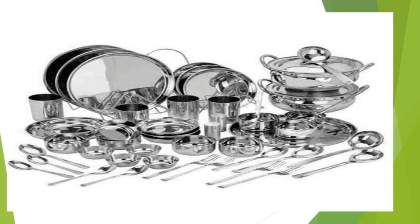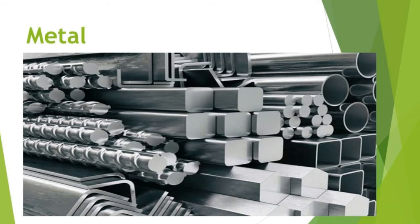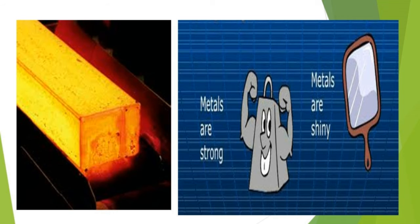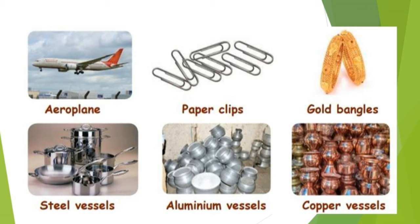Have you ever seen the different vessels in your kitchen? They are made from metals. Metals are materials got from metal ores — for example, gold, silver, iron and copper. Metals are strong and hard, so vehicles, gates and cooking vessels can be made from them. Metals are shiny. When heated, metals can be shaped into any form — from small paper clips to a huge aeroplane. Examples: aeroplane, paper clips, gold bangles, steel vessels, aluminium vessels, copper vessels.